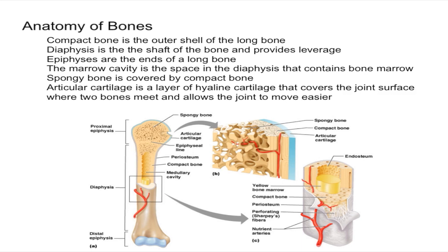Finally, let's talk about articular cartilage. Articular cartilage is a layer of hyaline cartilage that covers a joint surface where two bones meet, and this allows the joint to move more easily. It essentially helps reduce the friction between two bones, which has obvious benefits.